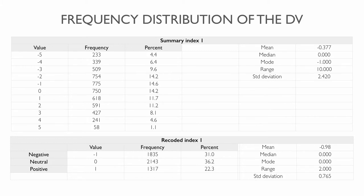The measures of central tendency and dispersion of the raw index are as follows. The mean was minus 0.377, with a median of minus 1, indicating most respondents placed quite close to the mode of 0, while the range was 10. The standard deviation was only 2.420, suggesting that most respondents placed somewhere in the middle, between minus 3 and 2.